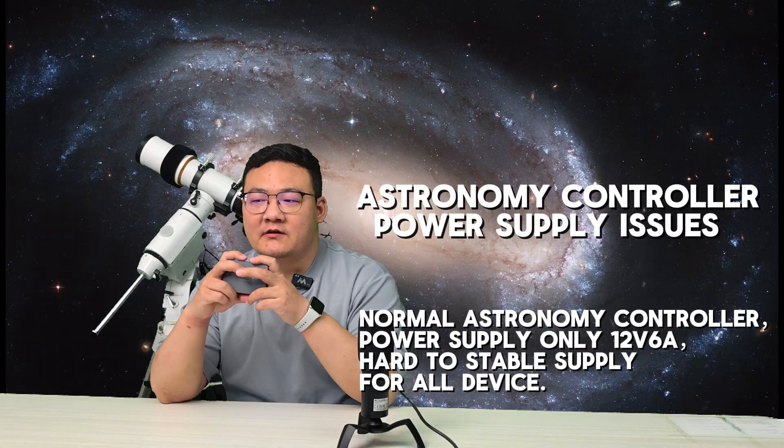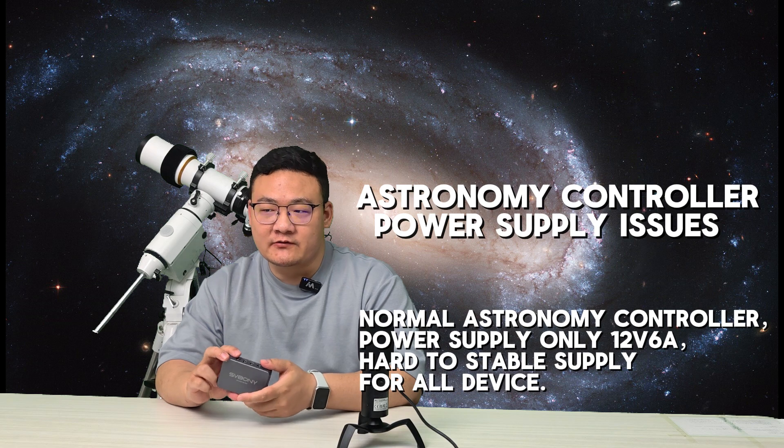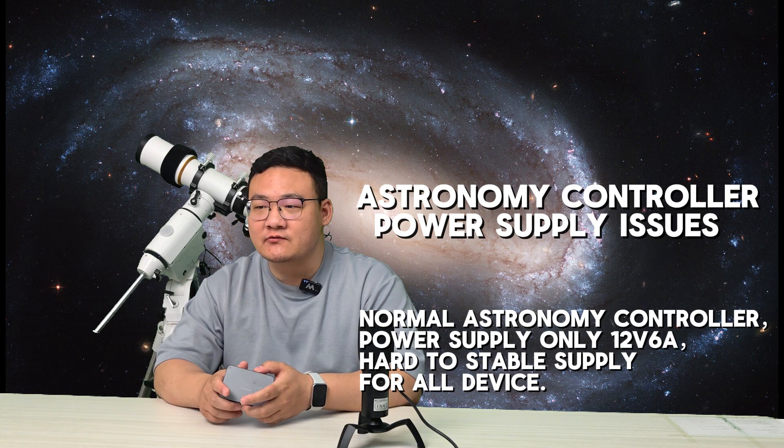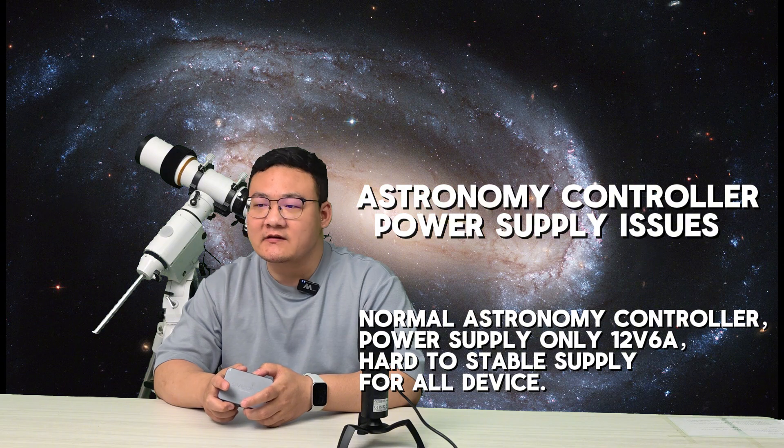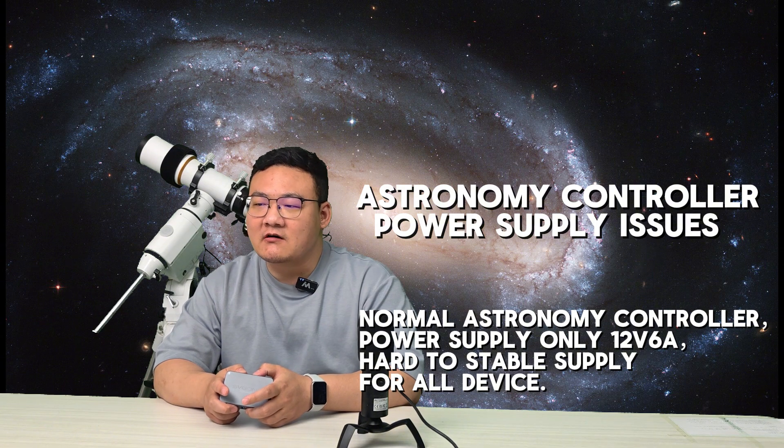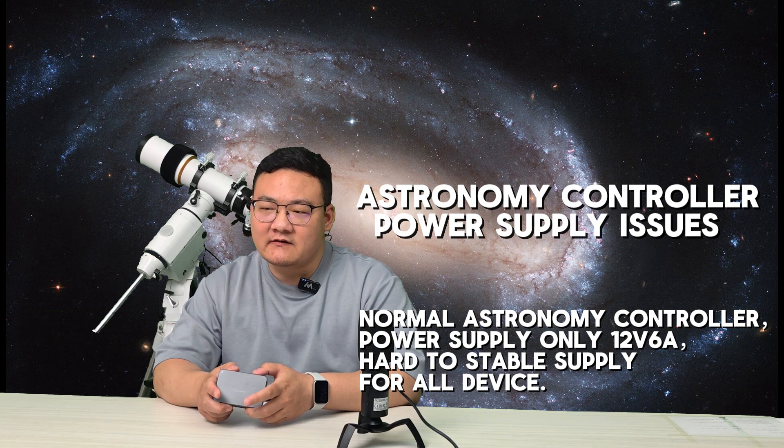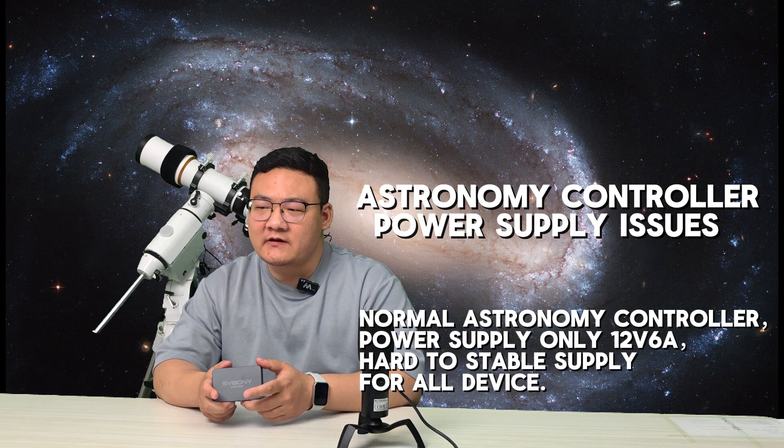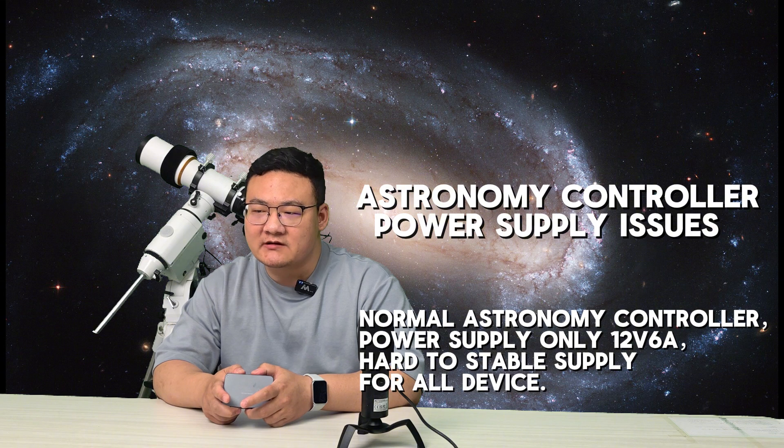The third issue is the power supply. One of our engineers shared that when using an astronomy controller for shooting, he found it couldn't provide enough power to his device. His astronomy controller output at 12V and 6A, which is only 72W. He felt there should be a more convenient solution to the power management challenges in astrophotography. And so, the SweepBounty SV241 was born.